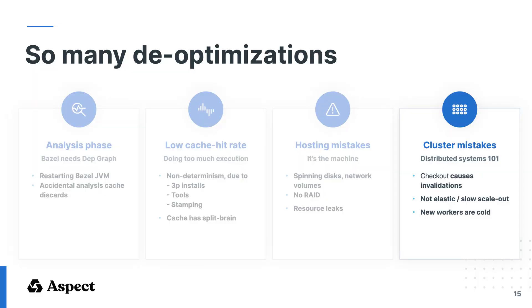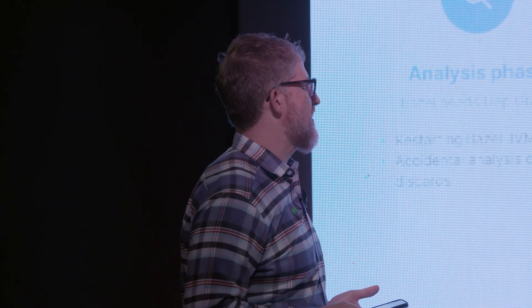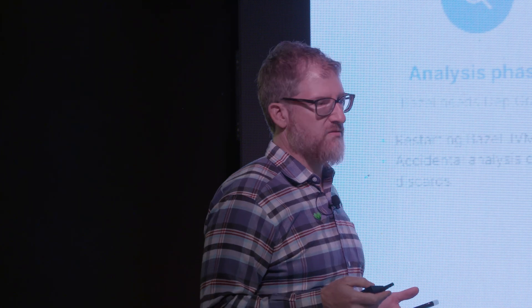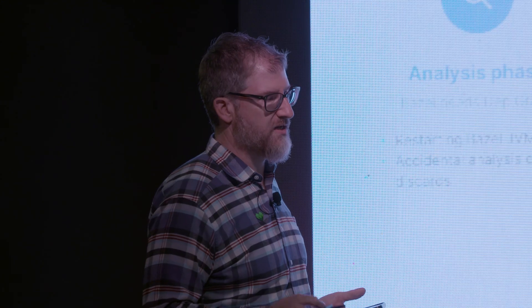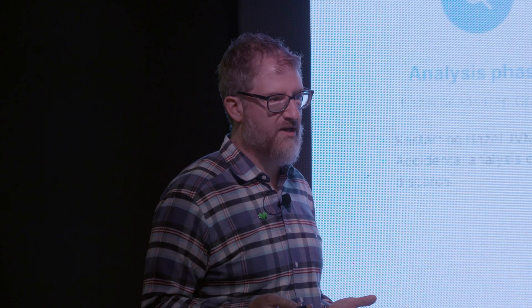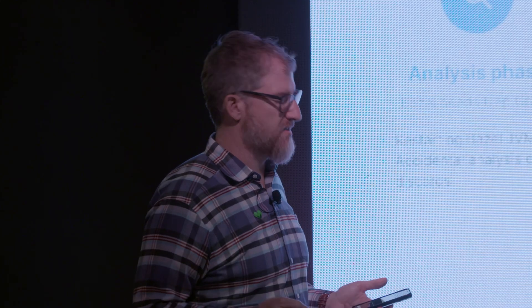The last group is mistakes in distributed systems land. The first example: you do a git checkout at the beginning of your CI step that is now rebasing you from whatever the previous state of this machine was, and it will invalidate a bunch of the graph. Then the next job comes in and rebases it back again. You might have either no elasticity — just a fixed pool of worker machines — or the scale-out might be slow to get a new machine. And once you have a new machine, that machine is cold and it's not going to give you the promised Bazel benefit.